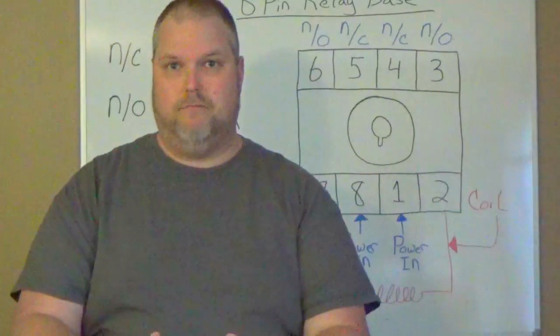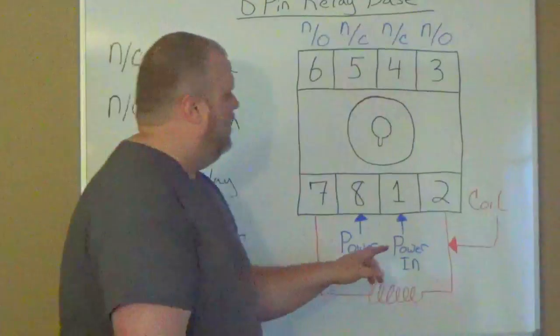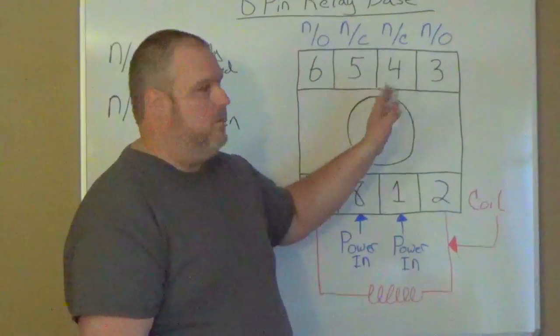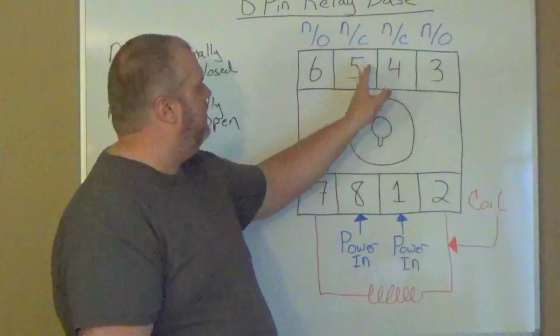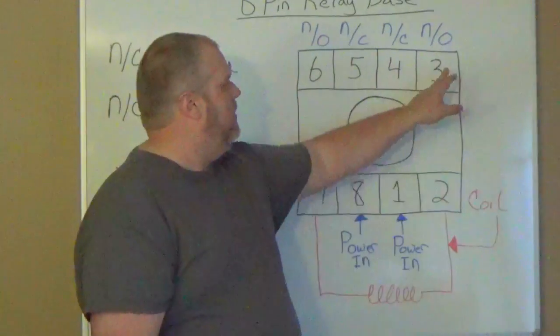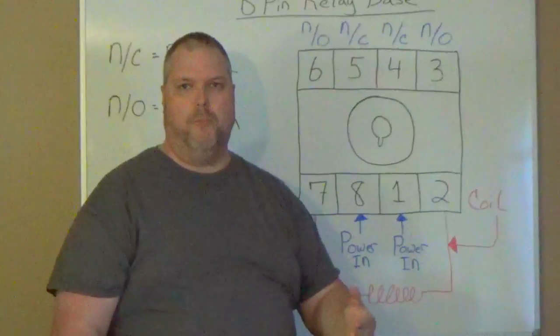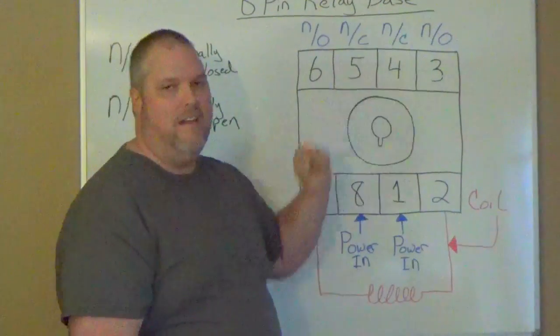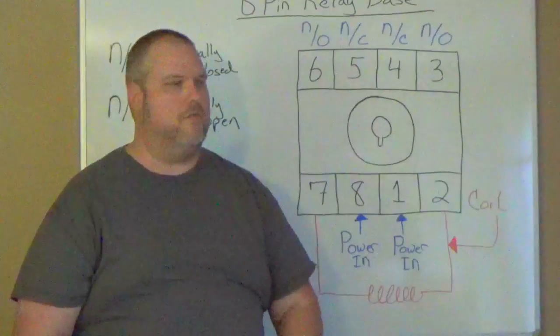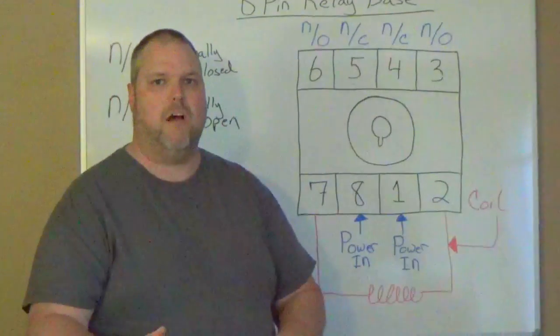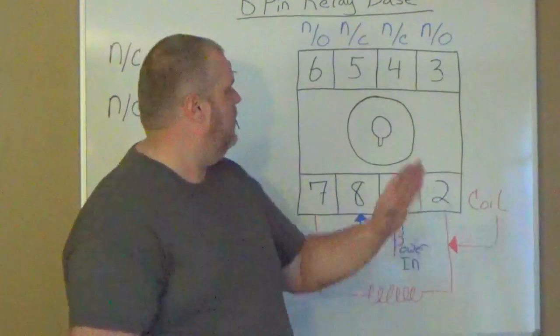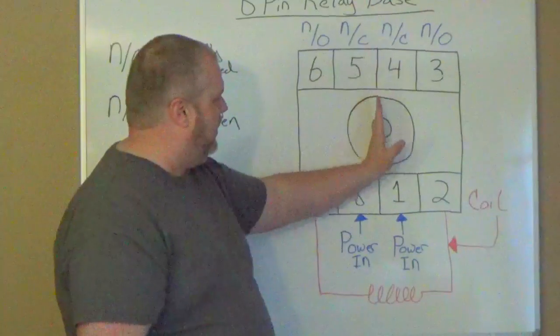We go to the top row: we have three, four, five, and six. Three and six are normally open. Four and five are normally closed. Here's how I want you to look at this: this relay is split in half.